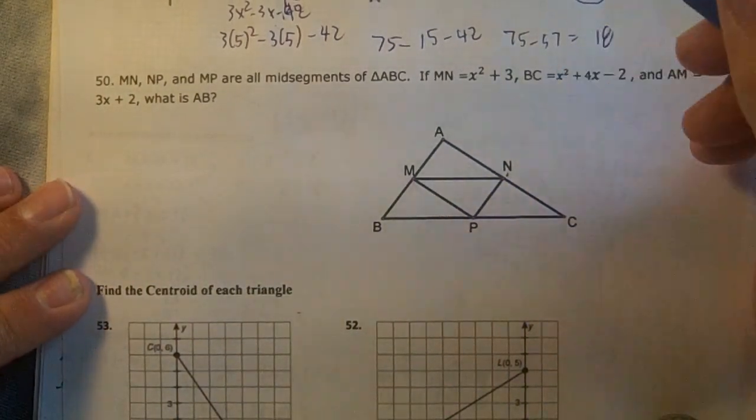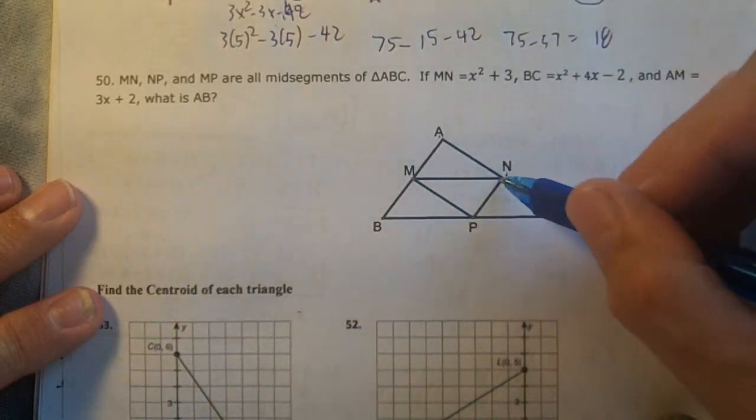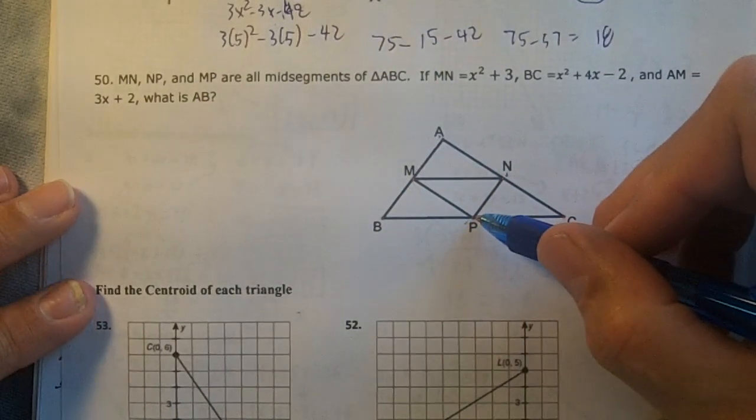These are all midsegments. I want to know what AB is, so I want this midsegment right here. Do I have MP?